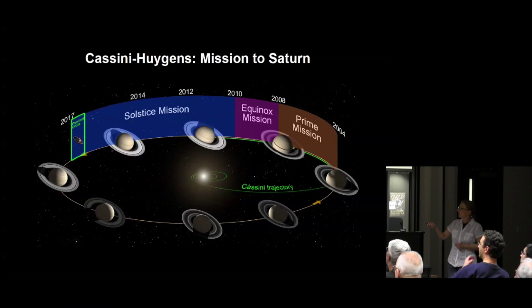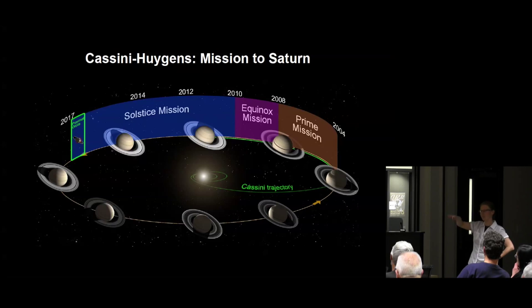The prime mission of the Cassini mission started in 2004 and was a four year mission. It arrived shortly after the winter solstice on the northern hemisphere and spanned almost one season. With the first extension to the equinox mission, we were present in the system through to the equinox. The second extension, the solstice mission, is a seven year extension which we are now in the final years of.